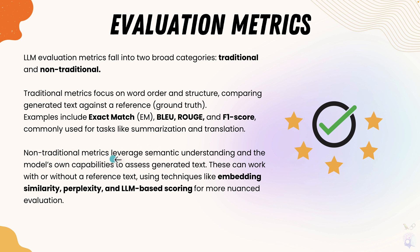Non-traditional metrics leverage semantic understanding and the model's own capability to assess generated text. These can work with or without a reference text, using techniques like embedding similarities, perplexity, and LLM-based scoring for more nuanced evaluation. This is particularly useful when fine-tuning a large language model and verifying it's working as expected. The Hugging Face Evaluate method is very handy for evaluating a large language model's output based on given input.